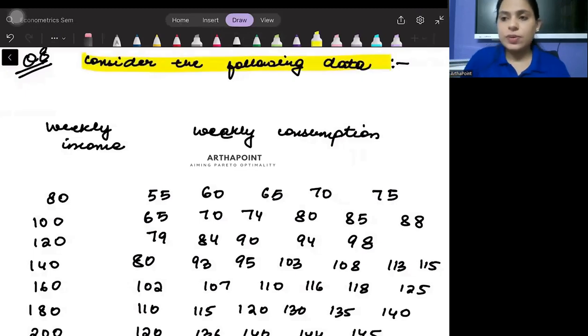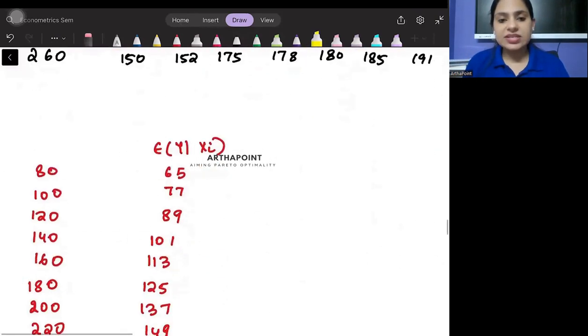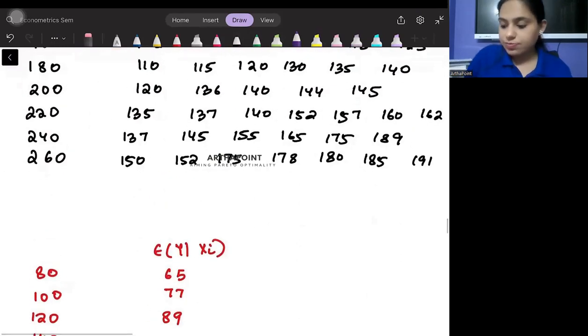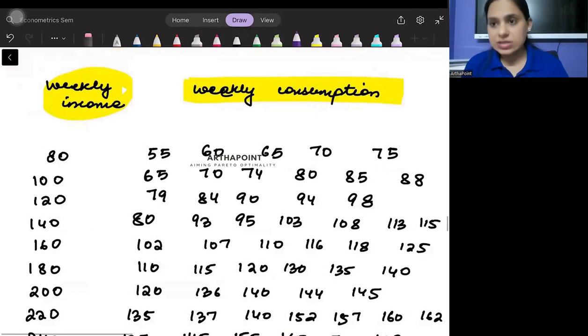Consider the following data set. You are given weekly income and weekly consumption. Part one asks you to find the conditional mean of y, or find conditional weekly consumption.